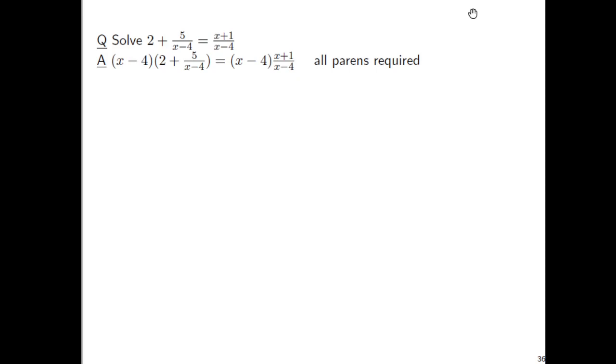Now, let's distribute. And on the left side, it's super tempting to foil, but that's not what I want to do. I really literally want to take the LCD. That is, I want to take x minus 4 and have that written twice. It's x minus 4 times 2, plus the LCD again, x minus 4 times this fraction, 5 over x minus 4. There's an x minus 4 that cancels on top and bottom to leave just a 5 on the left side. And the x minus 4 on top and bottom cancel so that you're left with x plus 1.